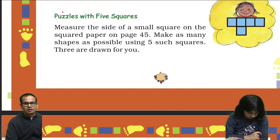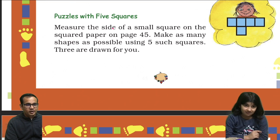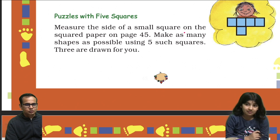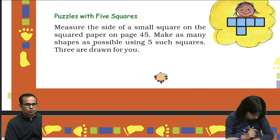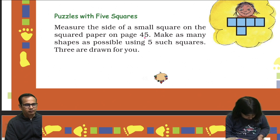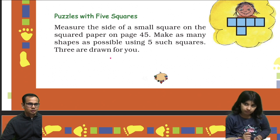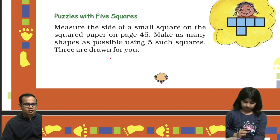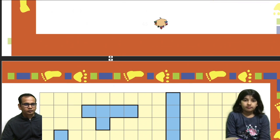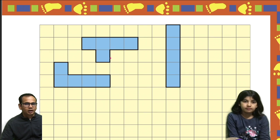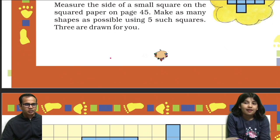Puzzles with five squares. Measure the size of a small square on the squared paper on page 45. Make as many shapes as possible using five such squares. Three are drawn for you. Okay, we will take this puzzle and this is the squared paper.